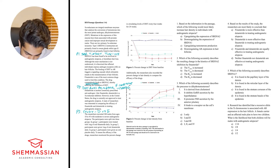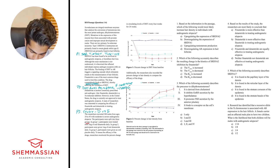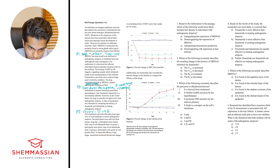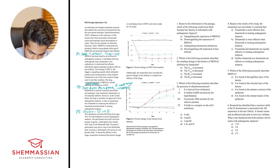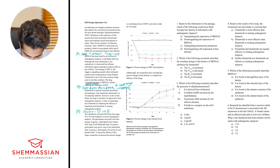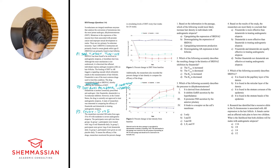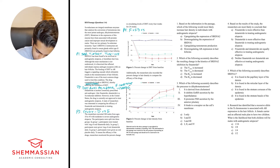Paragraph four: the researchers recruited 300 males from ages 18 to 45 with moderate to severe androgenetic alopecia. The participants were split into three groups: group one received one milligram of oral finasteride daily, group two received one milligram of oral dutasteride daily, and group three received an oral placebo daily. To assess efficacy, researchers monitored the percent change in circulating levels of DHT every four weeks for 24 weeks. So the study compares finasteride versus dutasteride versus placebo, measuring change in DHT.